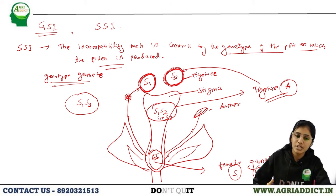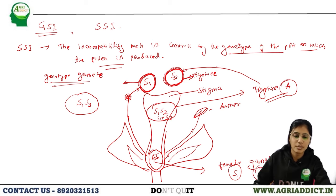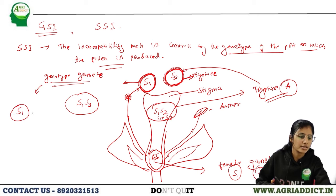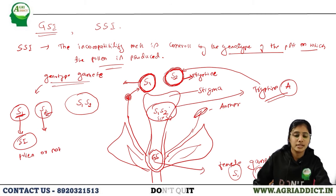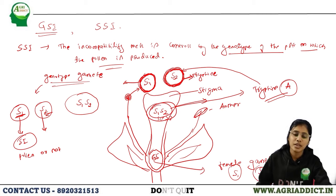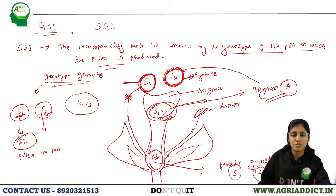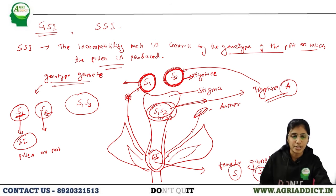The tryphine is majorly involved in determining whether pollen is accepted by the stigma. This is the major difference from gametophytic self-incompatibility: in GSI, the S1 and S2 alleles in the pollen itself individually control acceptance, whereas in sporophytic self-incompatibility, a substance produced by the female plant is deposited onto the pollen coat and determines acceptance.